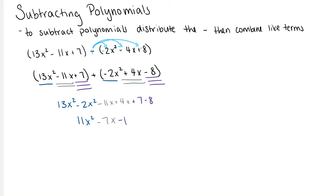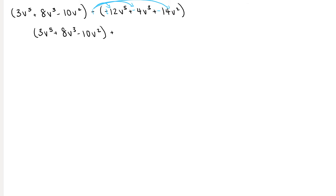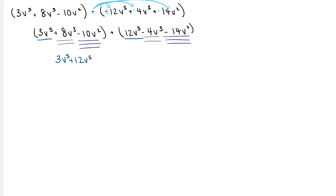Subtracting is just like adding polynomials with one extra step of changing all the signs to the right of our minus sign. For example: 3b to the 5th plus 8b to the 3rd minus 10b squared, minus negative 12b to the 5th plus 4b to the 3rd plus 14b squared. Distributing the minus sign gives 3b to the 5th plus 8b to the 3rd minus 10b squared, plus 12b to the 5th minus 4b to the 3rd minus 14b squared. Combining like terms gives a final answer of 15b to the 5th plus 4b to the 3rd minus 24b squared.